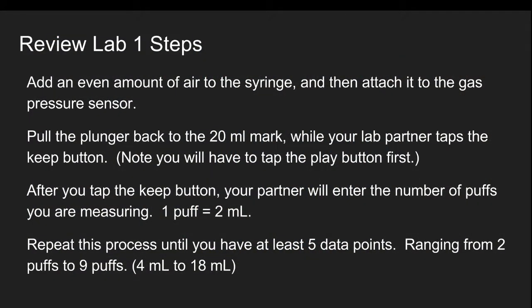Let's review the steps. You're going to add an even amount of air to the syringe and then attach it to the gas pressure sensor. Pull the plunger back to the 20 milliliter mark while your lab partner taps the keep button. If you don't see the keep button you need to hit the play button first. After you tap the keep button your partner will enter the number of puffs you are measuring. Remember one puff equals two milliliters. Repeat this process until you have at least five data points.